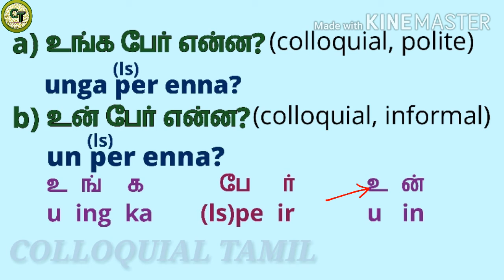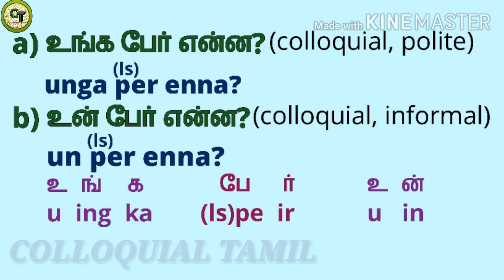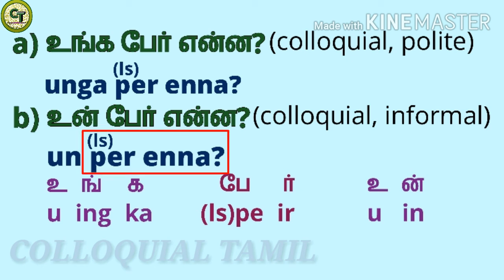The informal form is 'un pair enna.' For 'un': 'u' is a short zone vowel, 'in' a consonant, together: 'un.' This 'un' is different from the 'un' we learned for the verb 'eat' — for 'eat' we use big 'in,' here we use small 'in.' So: 'un pair enna.'